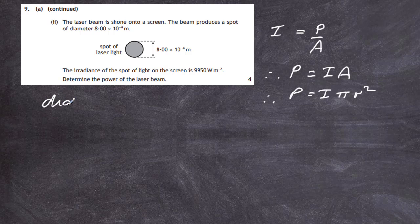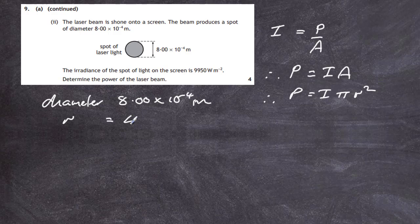The diameter is 8.00 times 10 to minus 4 of a meter. But be careful, the radius has got to be equal to half of that: 4.00 times 10 to minus 4 of a meter.